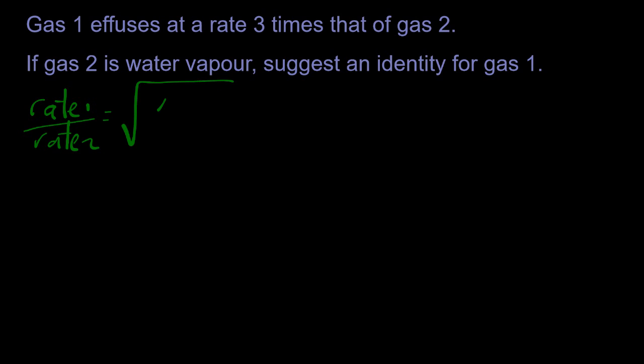Rate 1 over rate 2 equals the square root... Notice how the ones and twos are upside down on each side. So if it's three times that of gas 2, it's going to be three over one.